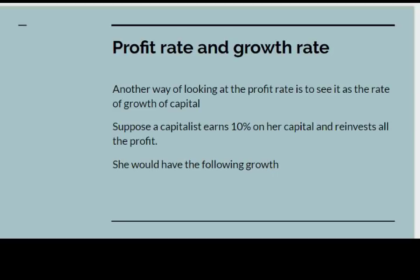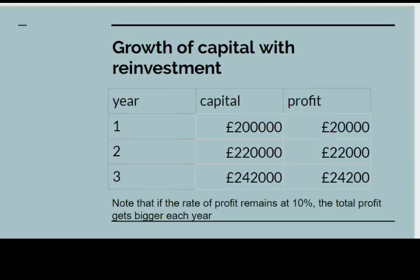The profit rate is related to the growth rate of capital — in fact you can look at the profit rate and see it actually as the growth rate of capital. Suppose a capitalist earns ten percent on her capital and reinvests it all as profit. In the first year the capital would grow by ten percent. Starting with £200,000, she earns £20,000 profit reinvested to give £220,000. At ten percent that gives £22,000, reinvested to get £242,000 of capital, yielding £24,200 of profit. If the rate of profit remains at ten percent, clearly the total profit is going to get bigger each year.